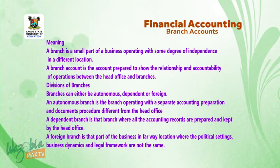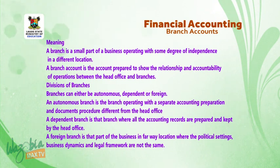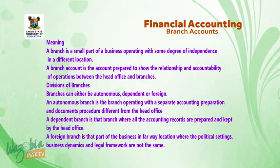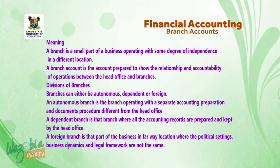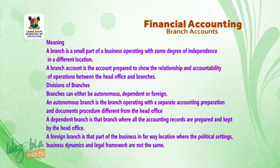Branches can either be autonomous, dependent, or foreign. An autonomous branch is a branch operating with separate accounting preparation and document procedures different from the head office. A dependent branch is one where all the accounting records are prepared and kept by the head office. A foreign branch is that part of the business in a far-away location where the political settings, business dynamics, and legal framework are not the same.